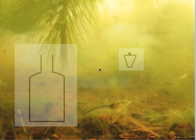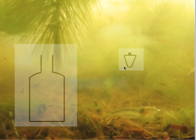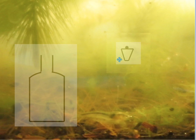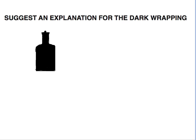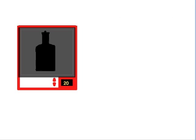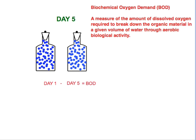To measure biochemical oxygen demand, a bottle is submerged beneath the surface and allowed to fill with water, then capped while still below the surface. Two samples are taken on day one: in one bottle, the level of dissolved oxygen is measured using probes or titrations. The other bottle is wrapped in an opaque liner and placed in an incubator at 20 degrees Celsius for five days. On day five, the dissolved oxygen level in the second bottle is measured.